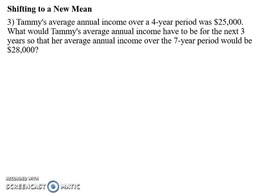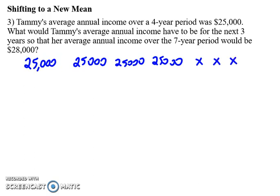Now let's look at this problem, which picks up a little bit because now you're dealing with not just one extra item, but three. Here we have Tammy's average income of $25,000 over four years, and we want to find Tammy's annual income over the next three years to raise the seven-year average to $28,000. If we draw out what's going on, we know the first four years are $25,000, and then we need to figure out these last three years.